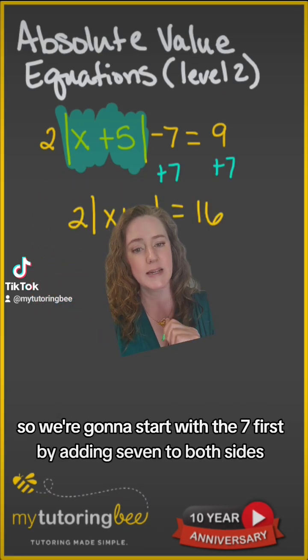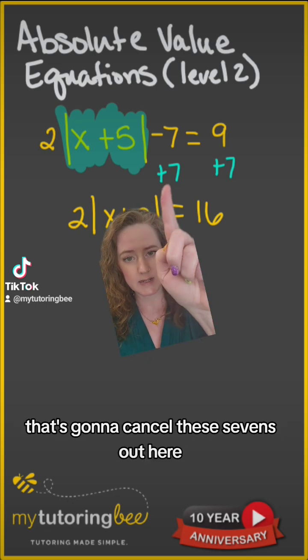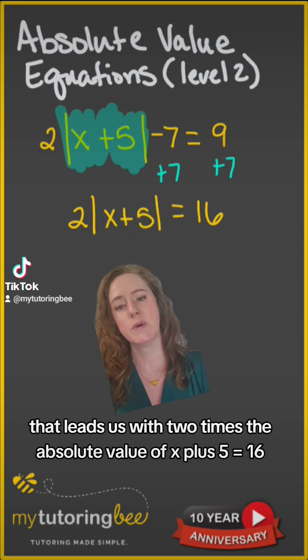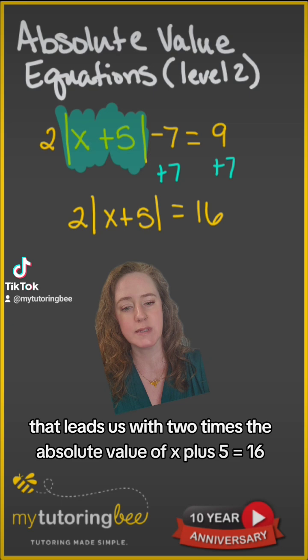So we're going to start with the seven first by adding seven to both sides. That's going to cancel these sevens out here. That leaves us with two times the absolute value of x plus five equals 16.